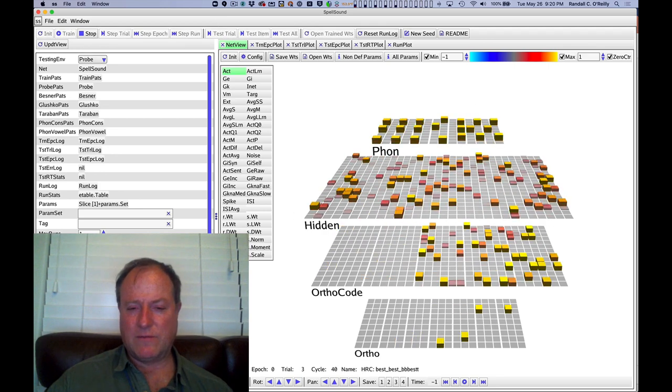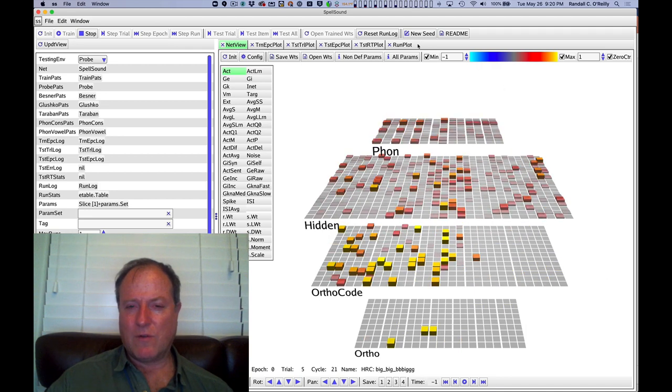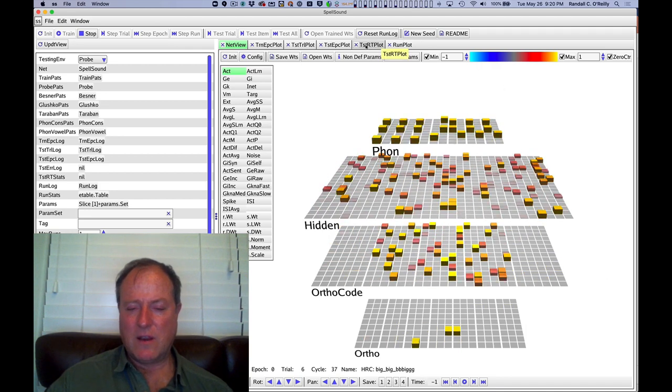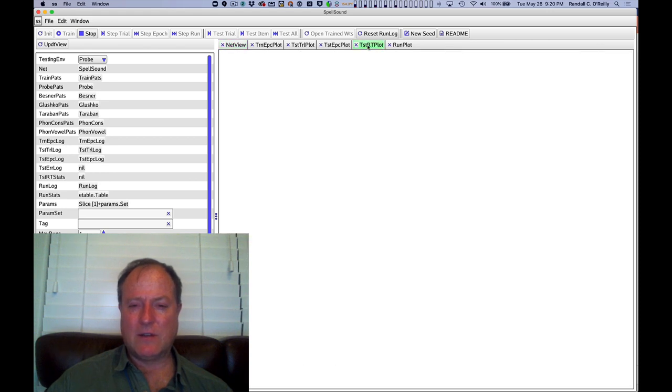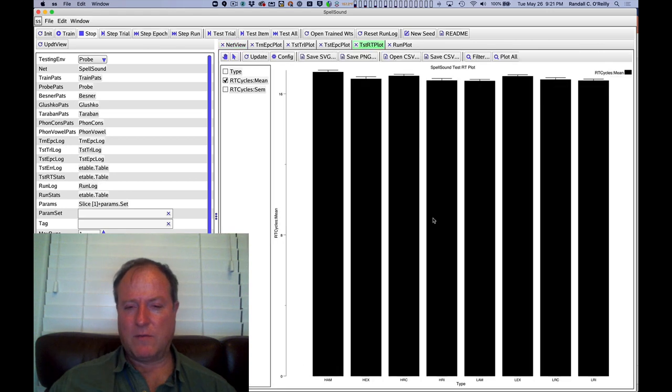This is a corpus of regular English words that have been organized according to different frequencies. And it allows us to look at the reaction time theory. The reaction time should be systematically faster for regular words, slower for irregular words, faster for high frequency, slower for low frequency. We get some of those effects, but not all of them. And probably there's an important role for the basal ganglia.